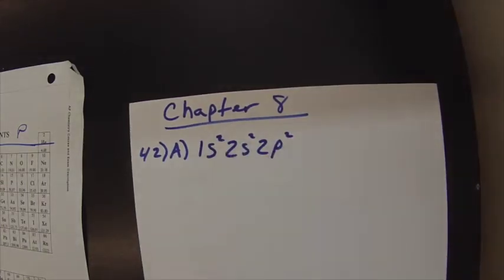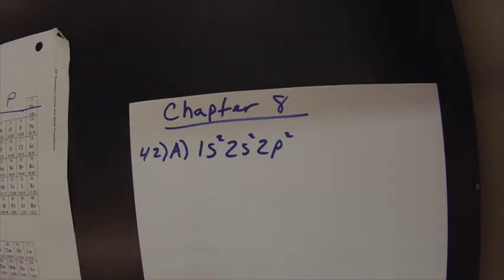Also you'll notice that that gives you 6 electrons and carbon is atomic number 6. So when it's neutral, it has 6 electrons. So that's a good way to check yourself.